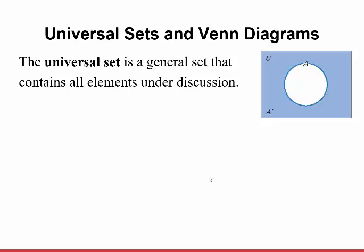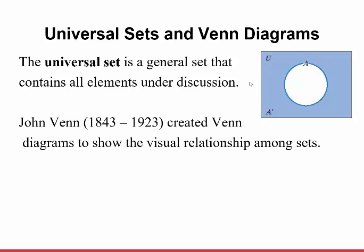A universal set is a general set that contains all elements under discussion. You see this U here — this concept was created by a person named John Venn, and he created what are called Venn diagrams. This entire figure is what's considered a Venn diagram, to show the visual relationship between a bunch of sets. Notice we have A, U, and A with a little dash — I'll define all those later.